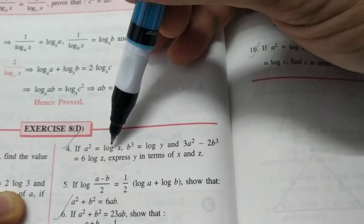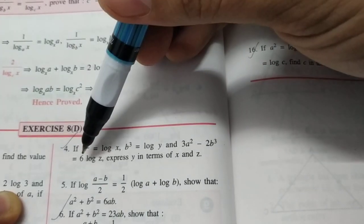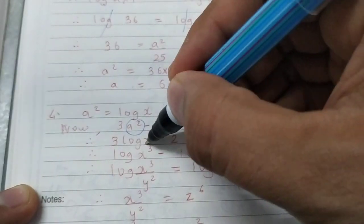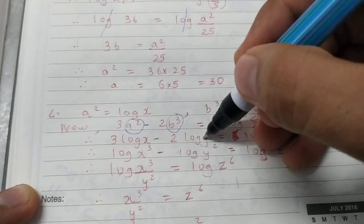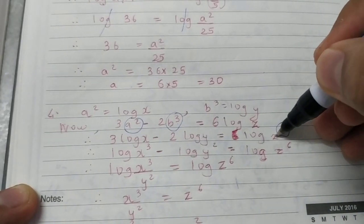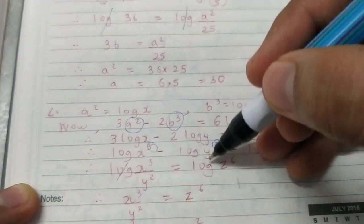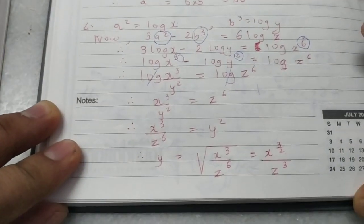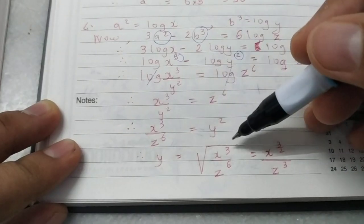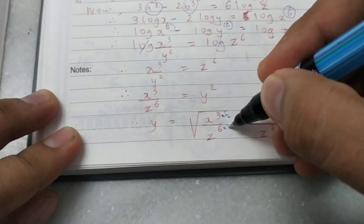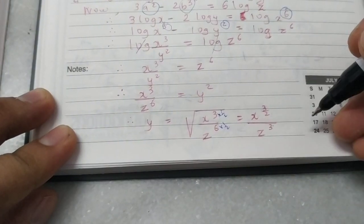Now the 4th sum. a² is log x, b³ is log y, and 3a² minus 2b³ is 6 log c. We need to express y in terms of x and z. Start with the given equation. Substitute a² as log x and b³ as log y. The coefficient 6 becomes a power of z. Subtraction means division, log disappears. Now, I want y alone — step by step, send everything to the other side. Square becomes square root, which is a power of half. So 3 times half and 6 times half gives x raised to 3/2 and z cubed — that's the final answer.